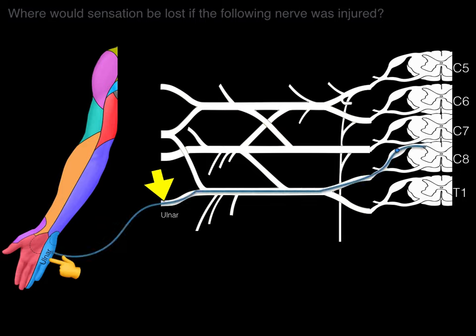So in summary: for dermatomes, injury to a root or trunk loses sensation in its associated dermatome or dermatomes. For cutaneous fields, if you injure a nerve, you lose sensation in its associated cutaneous field. And that, my friends, is a discussion of dermatomes and cutaneous fields in a nutshell.